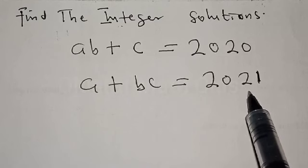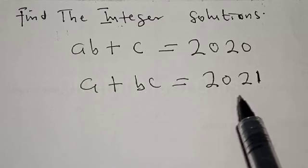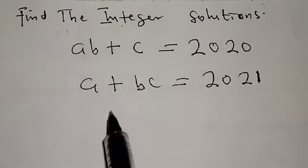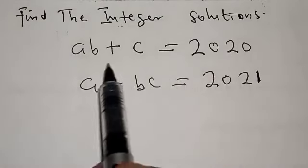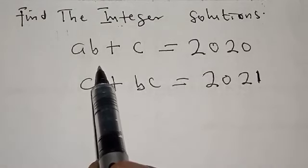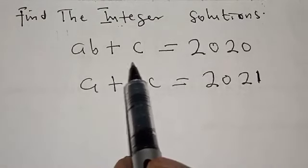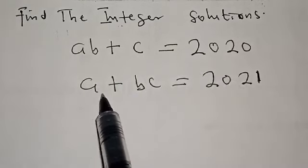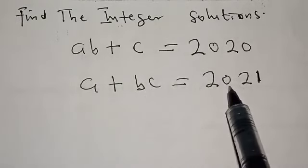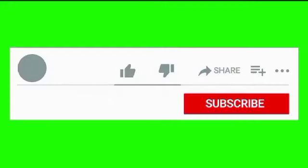Hi everyone, welcome to my class. In this class, we want to find the integer solutions from this given equation: AB plus C is equal to 2020, and A plus BC is equal to 2021.